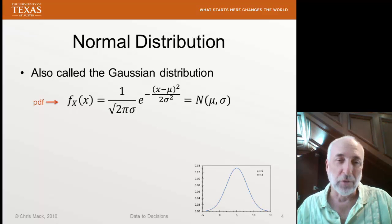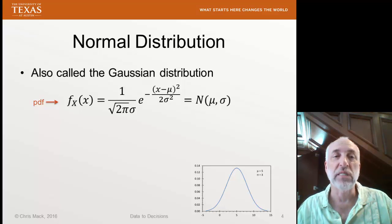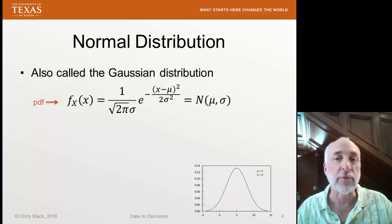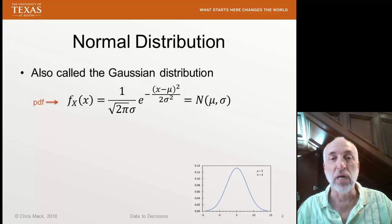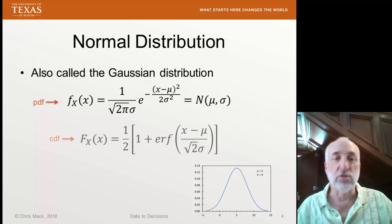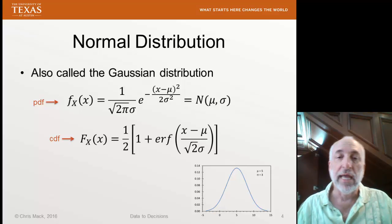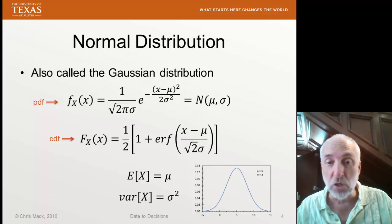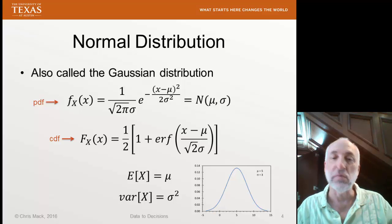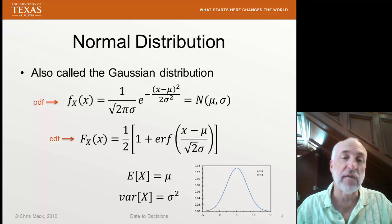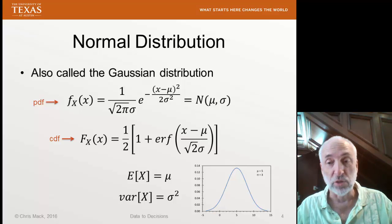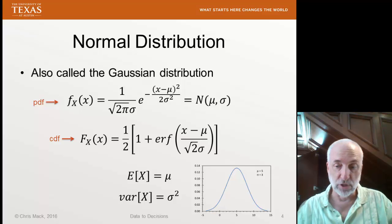As a very quick review, the equation for a normal distribution is the PDF — the probability distribution function — for the Gaussian normal distribution. There are two parameters: mu, the mean, and sigma, the standard deviation. The cumulative distribution function is an error function. The expectation value of this random variable is mu, and the variance is sigma squared, where sigma is the standard deviation — our spread parameter for the normal distribution.